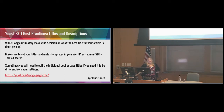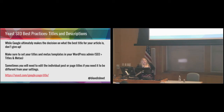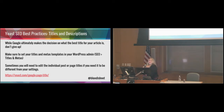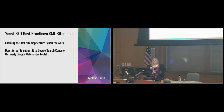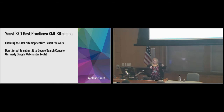Yoast SEO best practices — titles and descriptions. While Google ultimately makes the decision on what the best title for your article is, don't give up. Make sure to set your titles and meta templates in your WordPress admin under SEO, Titles, and Meta. Sometimes you'll need to edit individual post or page titles if you need them to be different from your settings. For XML sitemaps, enabling the sitemap feature is only half the work — you also need to submit your site to Google Search Console. That's the fastest way for Google to find you if you're really new.